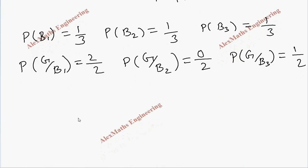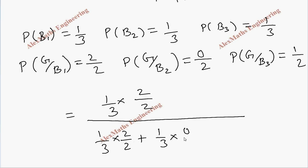We want to substitute all the values in the formula. So, P of B1 into P of G by B1 which is 2 by 2. Whole division. And we have to copy this. And the second term is P of B2 into P of G by B2 which is 0 by 2 plus and the last term is 1 by 3 into 1 by 2.